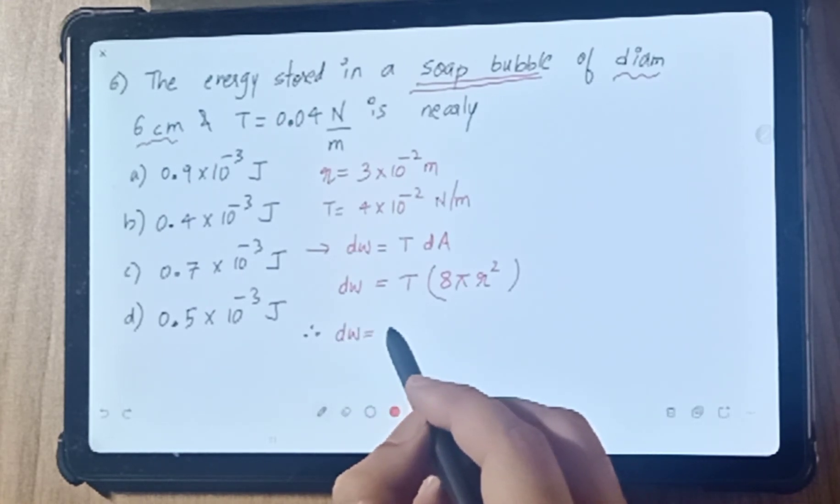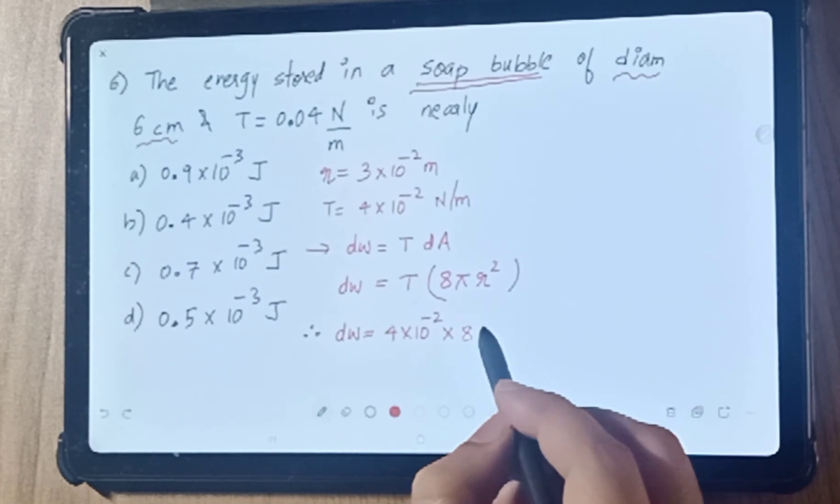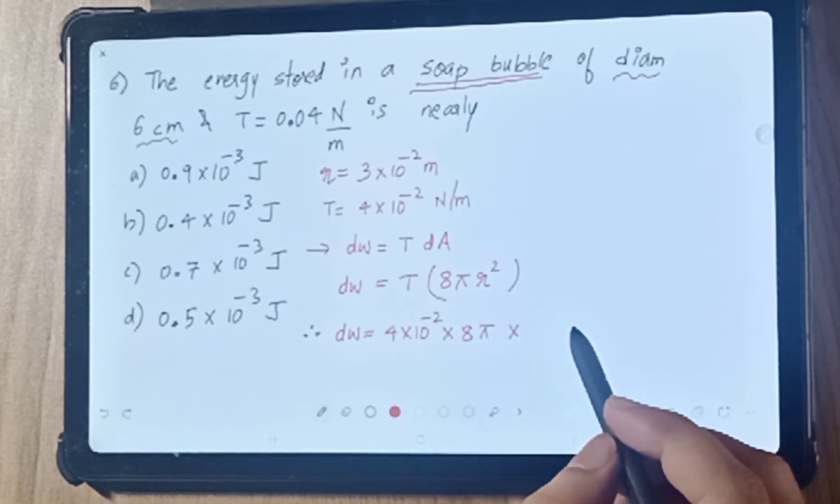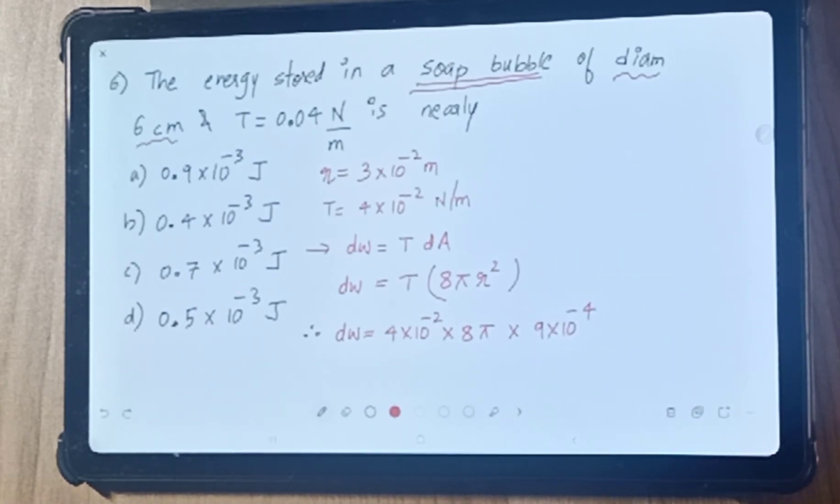That means DW equals surface tension T, which is 4 × 10⁻² N/m, times 8π times radius squared. Radius is 3, so 3² = 9, and 10⁻² squared gives 10⁻⁴.